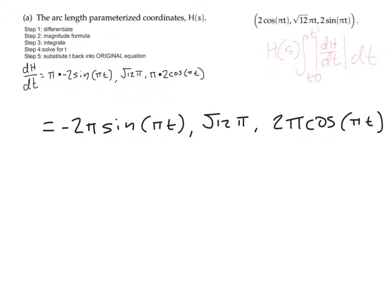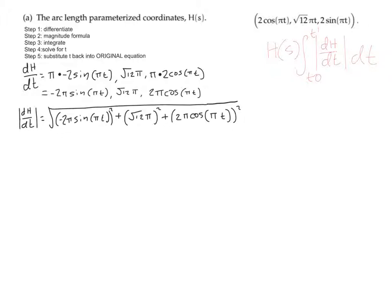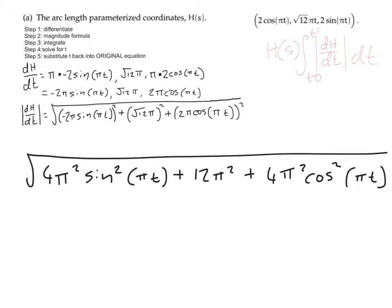Next we apply the magnitude formula. We put each term inside brackets and square it under a big square root: (−2π·sin(πt))² + (√12·π)² + (2π·cos(πt))². Squaring gives: 4π²sin²(πt) + 12π² + 4π²cos²(πt).